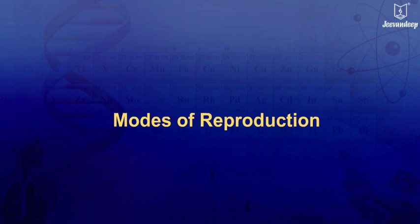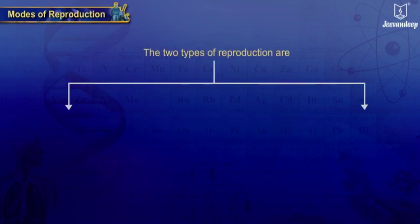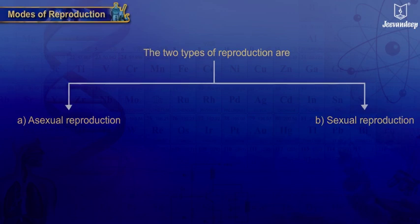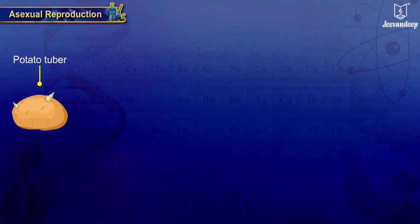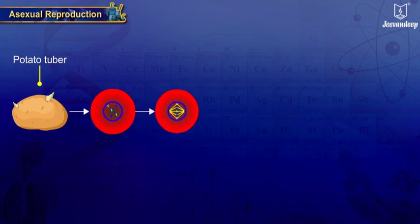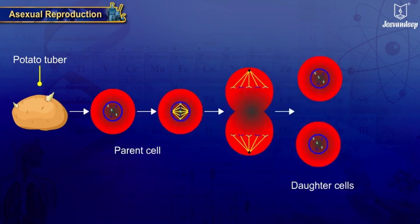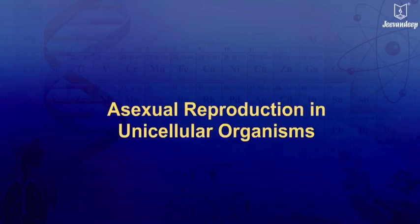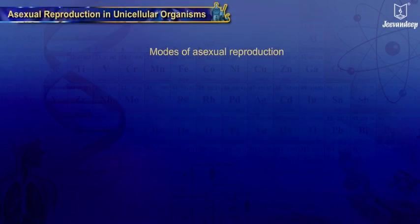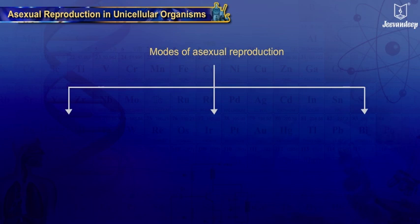The two types of reproduction are asexual reproduction and sexual reproduction. Asexual reproduction is a mode of reproduction where only one parent is involved. In this case, cells divide mitotically and there is no fusion of gametes, so the offspring are genetically identical to the parent. The various modes of asexual reproduction in unicellular organisms are binary fission, multiple fission, and budding.